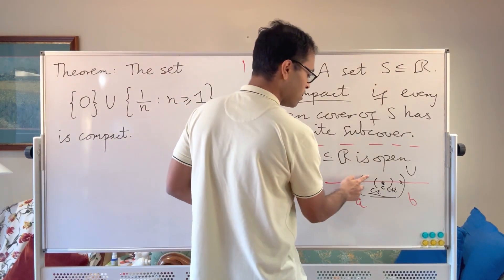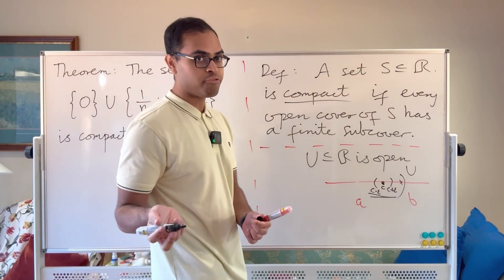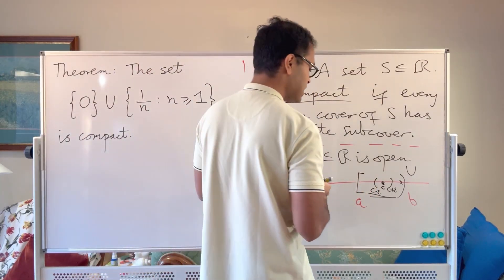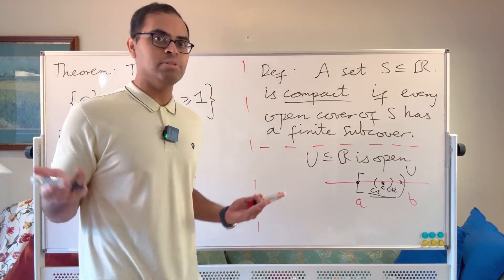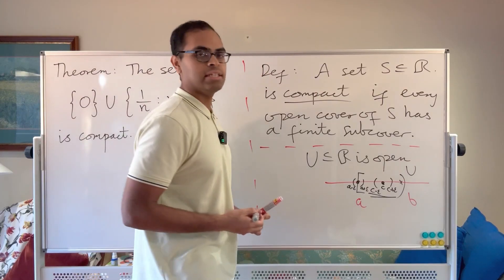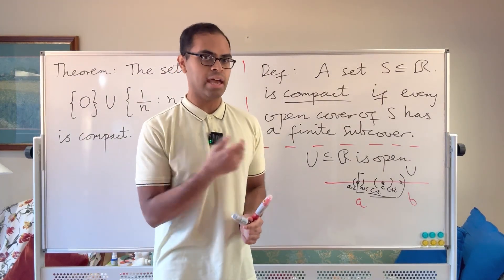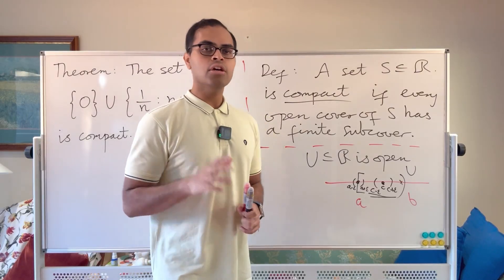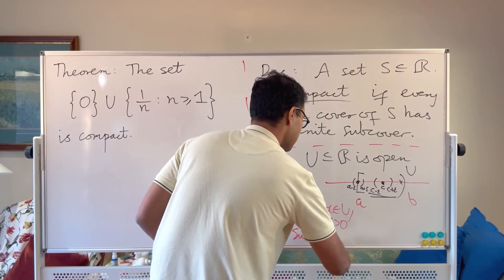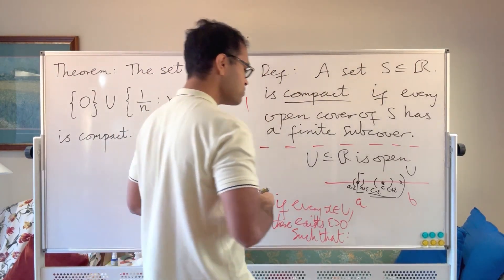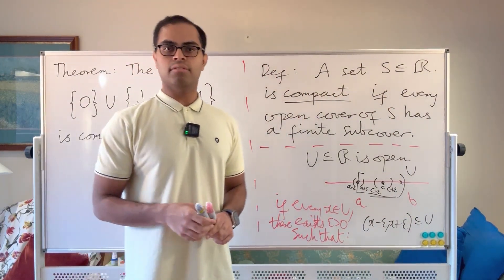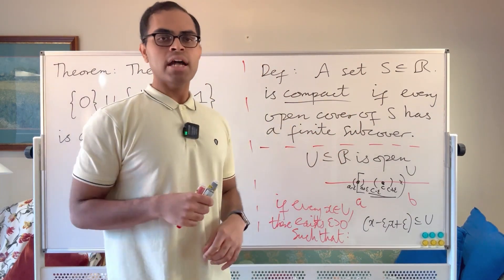An example of something that's not open: if instead of an open interval we had a half-open or closed interval that includes the boundary point a, it would not be open because the point a doesn't have wiggle room to the left — there's no epsilon such that a minus epsilon to a plus epsilon is entirely contained in U. Formally: U is open if for every x in U, there exists epsilon greater than zero such that the interval (x minus epsilon, x plus epsilon) is contained in U.